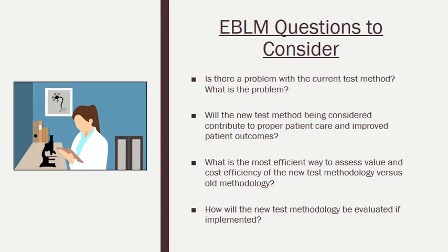Let's say the lab is considering changing to a new test methodology and is working through the evidence-based practice process to determine if they should follow through. During the process, they need to keep some basic questions in mind. First, is there a problem with the current test methodology, and if so, what is it — is it the turnaround time, problems communicating results, or is the test being ordered inappropriately? Then the lab should question whether the new test methodology would contribute to improved patient outcomes, and compare the value and cost efficiency of the new method to the current one. They should also consider how the new testing will be implemented and evaluated. As they move further along in the EBP process, it should help them with evidence-based decision making.